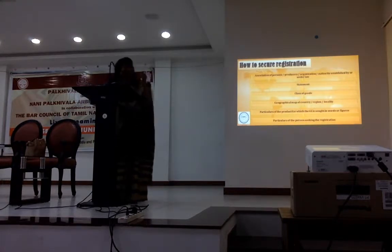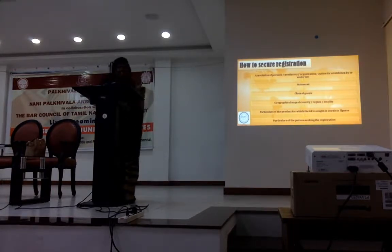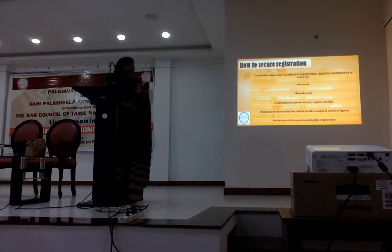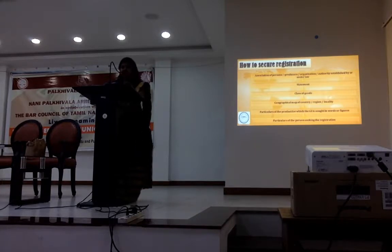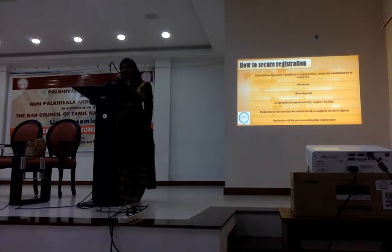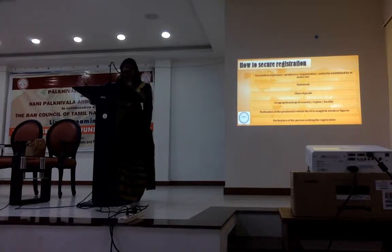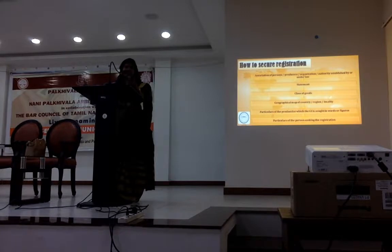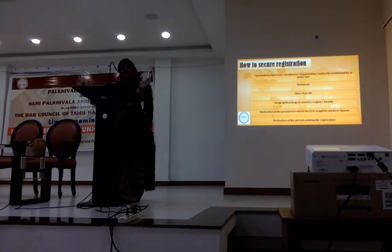Who can file for a GI? Any association of persons, producers, organization, or authority established by or under law. In most regions around the world, it is only authorities established under law. For instance, APIDA in India is a statutory authority and they are the owners of the Basmati trademark, covering the sub-Himalayan Indo-Gangetic plain, which covers several states.